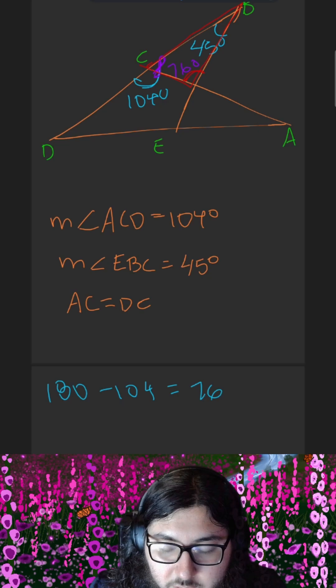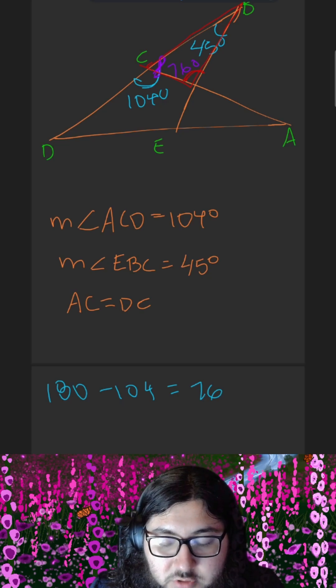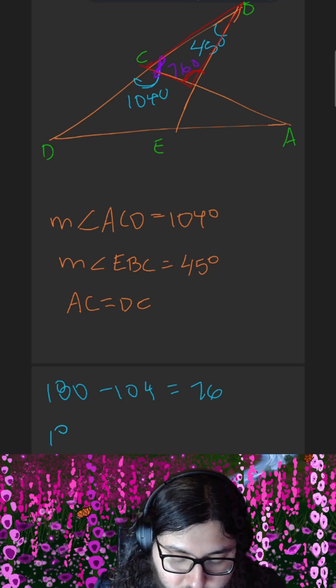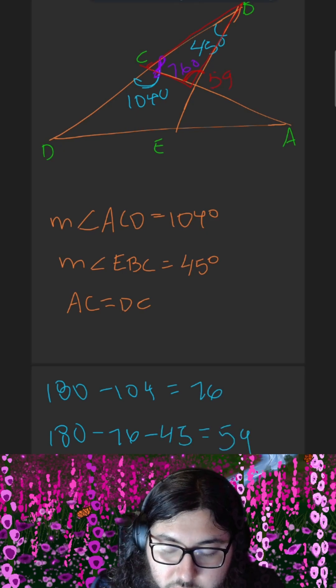Finally, because we have two angles in this triangle highlighted in red, we can calculate the third by the fact that all interior angles of a triangle add up to 180 degrees. Therefore, if we subtract from 180, 76 and 45, this red angle is 59 degrees.